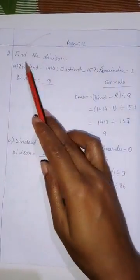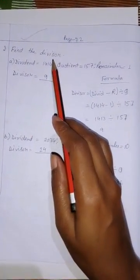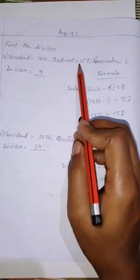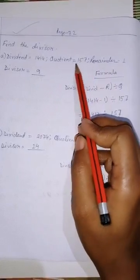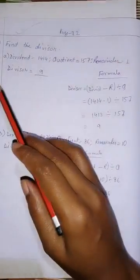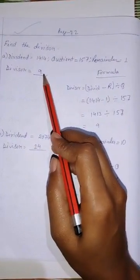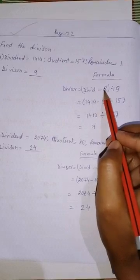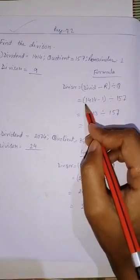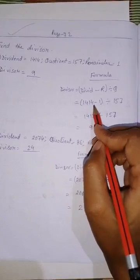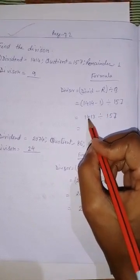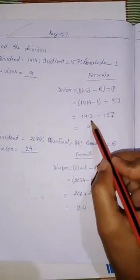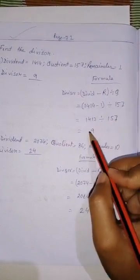Next, question number 3: find the divisor. Dividend is given as 1414, quotient is 1056 — sorry, 1057 — remainder is 1, and divisor is unknown. The formula is: divisor equals (dividend minus remainder) divided by quotient. So: 1414 minus 1 is 1413, divided by quotient 157. The answer is 9.